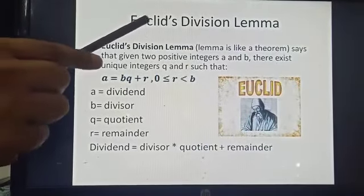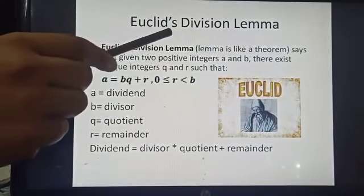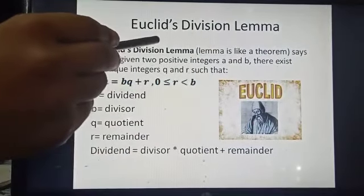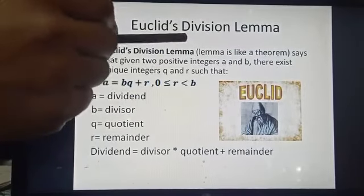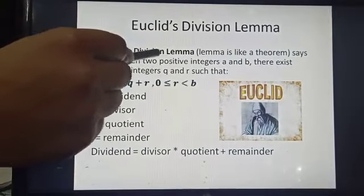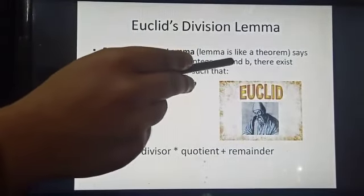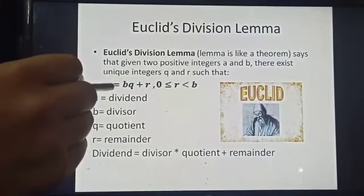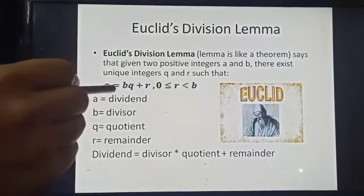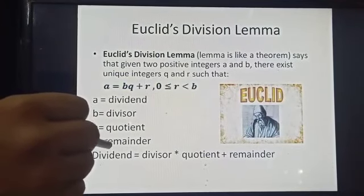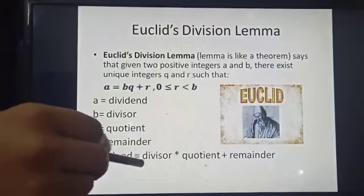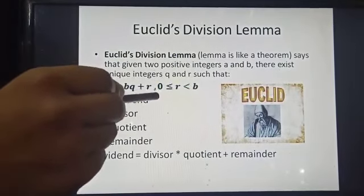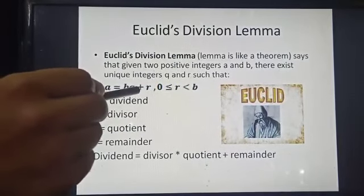The first topic of our syllabus is Euclid's division lemma. Euclid was a Greek mathematician, also known as the father of geometry. He proposed one division theorem called the division lemma. A lemma is a statement which can be proved for proving another statement. Euclid's division lemma states that for any two positive integers a and b, you can write a = bq + r, where a is the dividend, b is the divisor, q is the quotient, and r is the remainder.